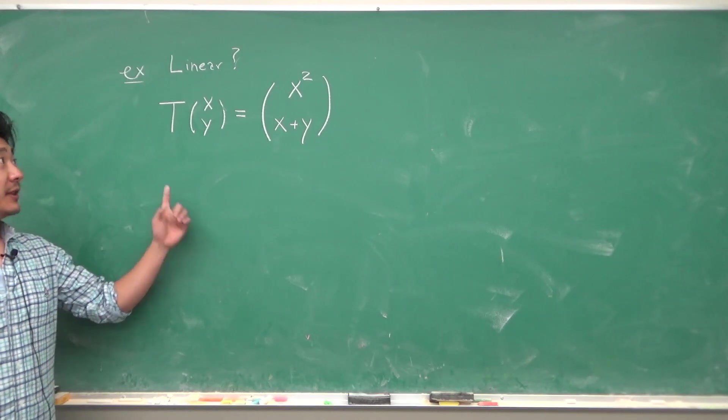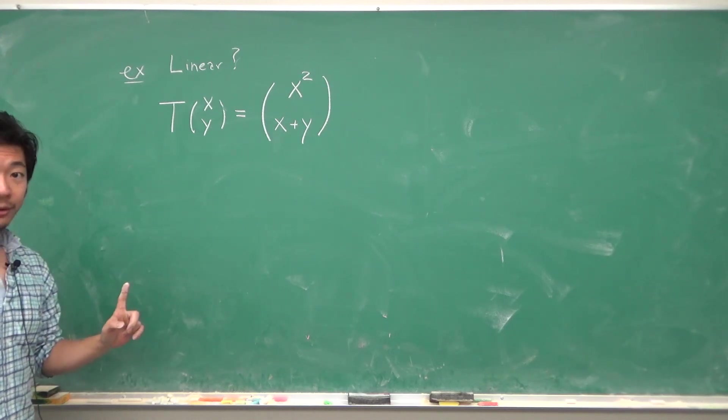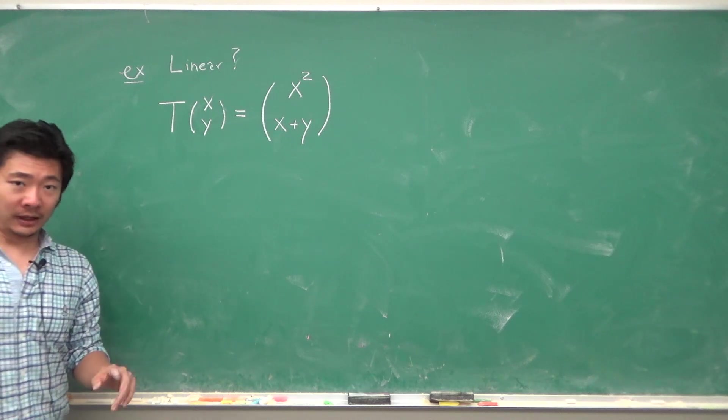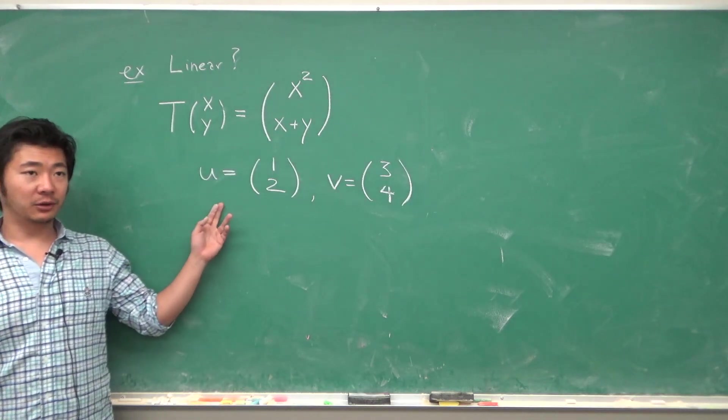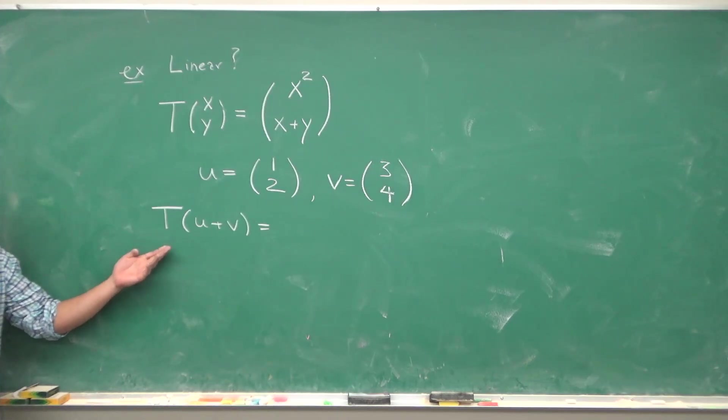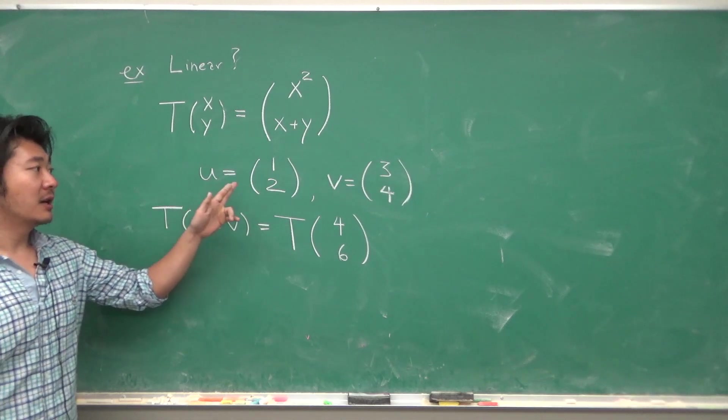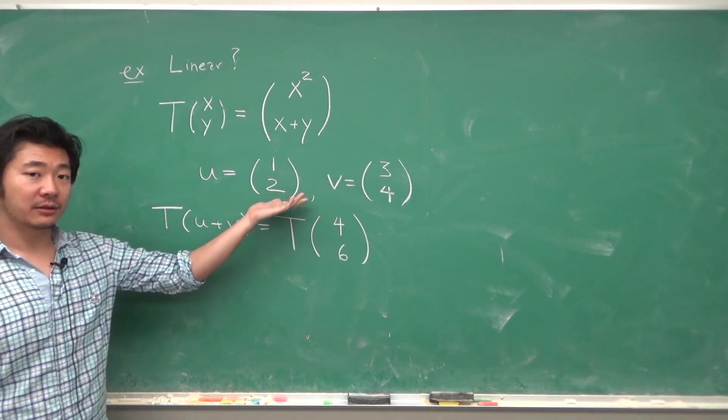Suppose we are given this transformation. Let's check if this is linear or not. In order to do so, we need to first have two vectors. Let u be the vector (1,2) and v be the vector (3,4).